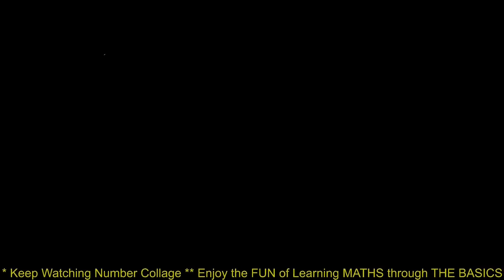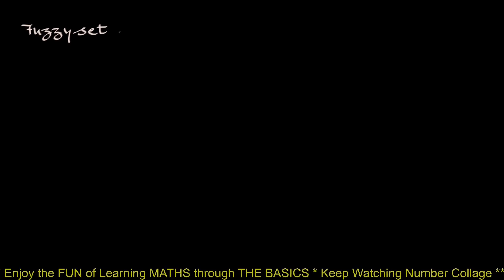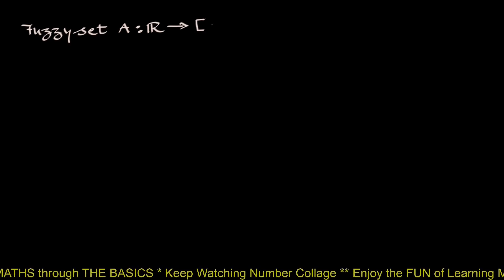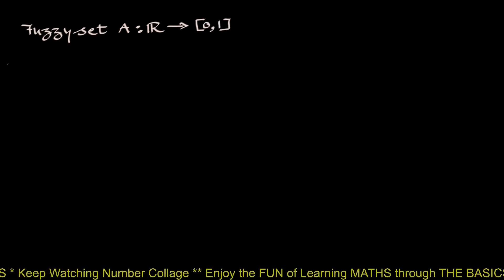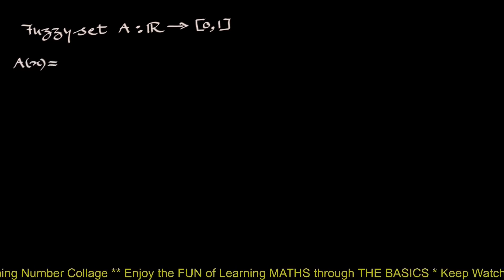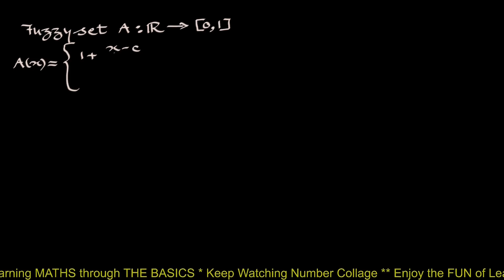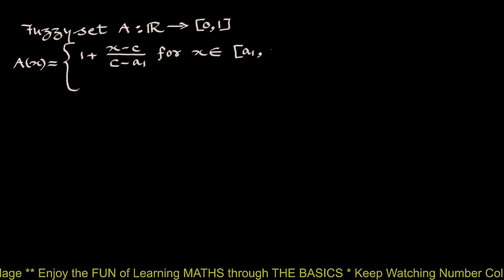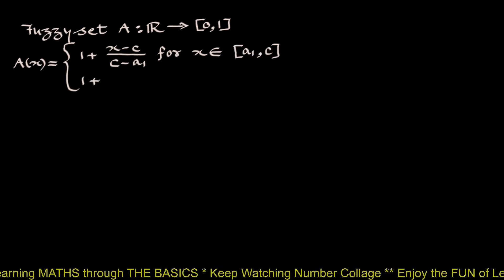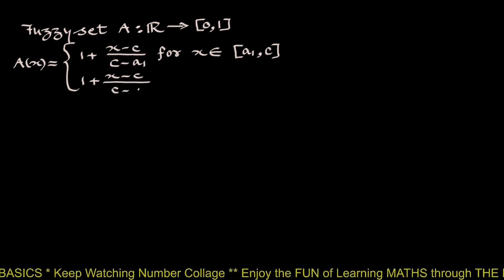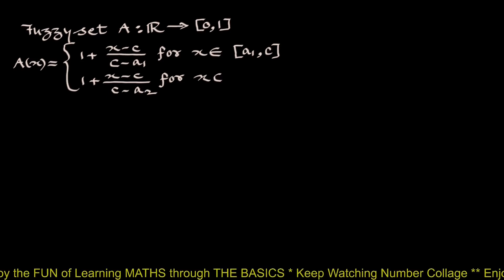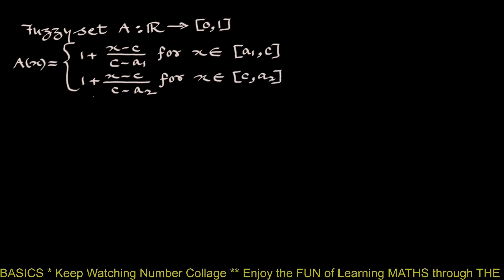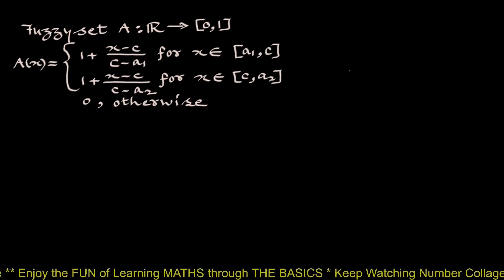We will investigate whether the following fuzzy set is a fuzzy number or not. Fuzzy set A is defined on the set of real numbers with grades of membership in the closed interval [0, 1]. The membership function A(x) equals 1 plus (x minus c) divided by (c minus a1) for x in closed interval [a1, c], and equals 1 plus (x minus c) divided by (c minus a2) for x in closed interval [c, a2], and is 0 otherwise.